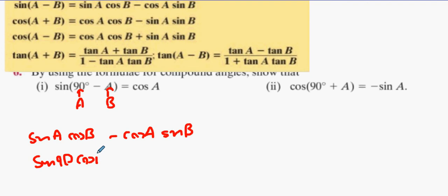So sin 90 cos A - just give me a sec, it's minus. Cos B gets replaced with A, then that's cos 90 sin A. What's sin 90 and cos 90? Sin 90 is 1, cos 90 is 0. So you're just left with cos A and you're done.